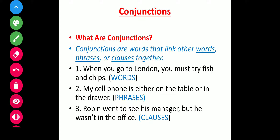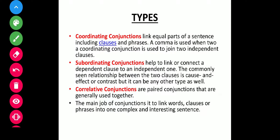Types of conjunction — mainly three types hain. Pahli hai coordinating conjunction. Coordinating conjunction kya hota hai: it links equal parts of a sentence, including clauses and phrases. Ye equal rank ke clauses ya phrases ko join karta hai. Ek comma is used when two clauses of equal rank are joined together.